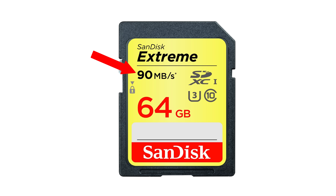Let's talk about speed. There is this big megabytes-per-second number on the card, and everyone only looks at this number — but that is a mistake. Let me explain why. Let's talk about taking video, which is much more critical than photography since it requires more space.